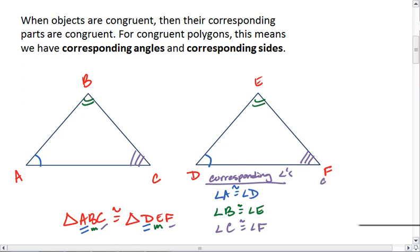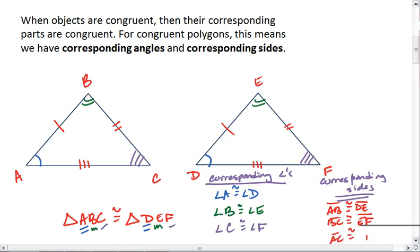We also have corresponding sides. And for this triangle, we have AB congruent to DE, we have BC congruent to EF, and we also have AC congruent to DF.